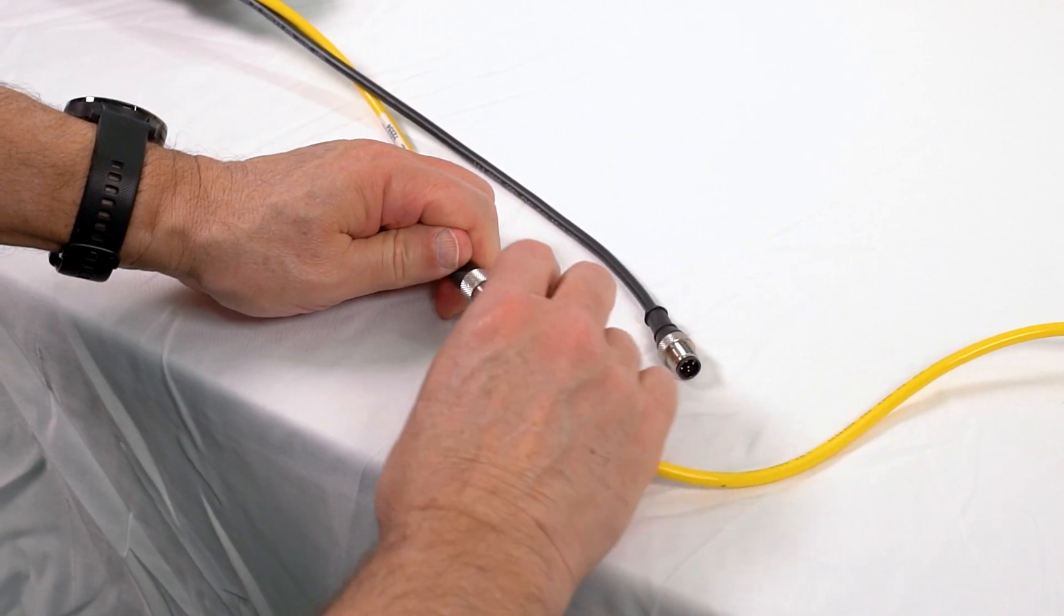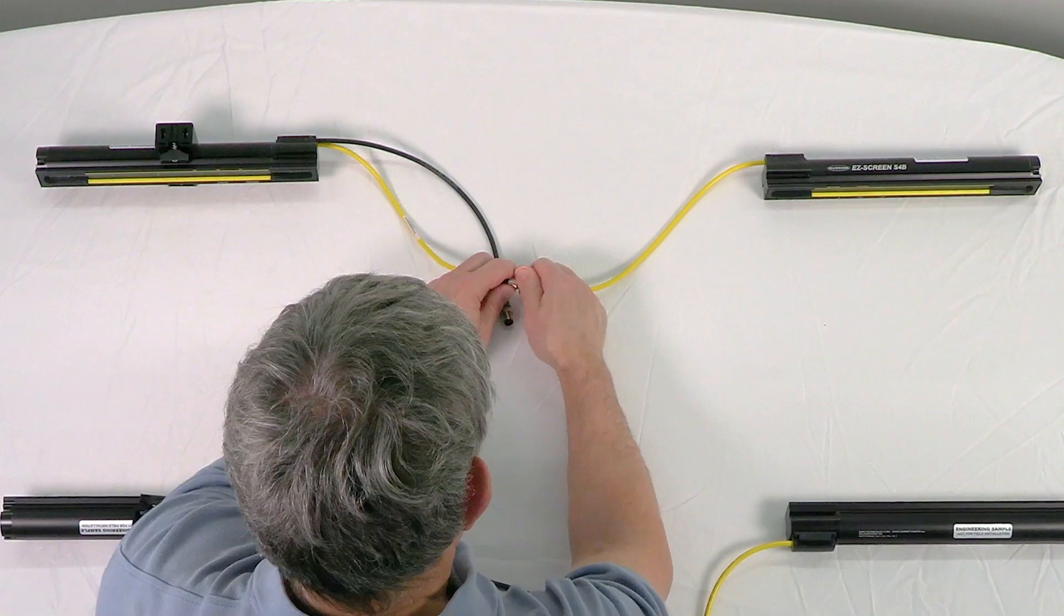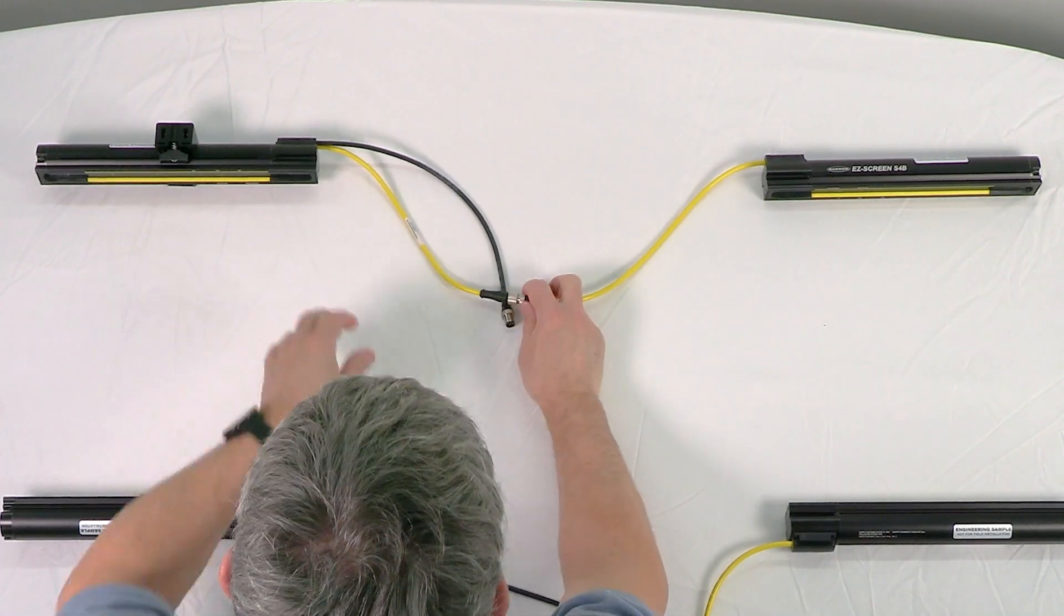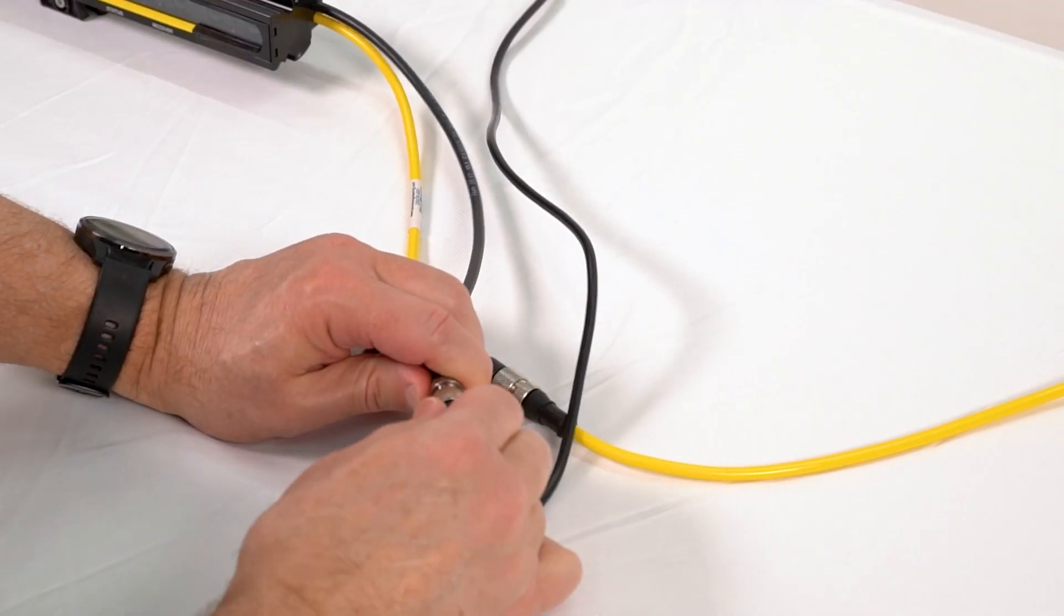Plug the yellow cable into that of the next unit in the chain. Once these connections are made for both the emitters and receivers, connect the black cables to power.